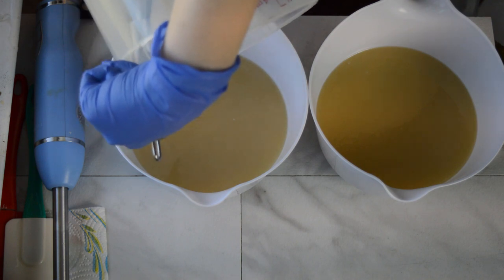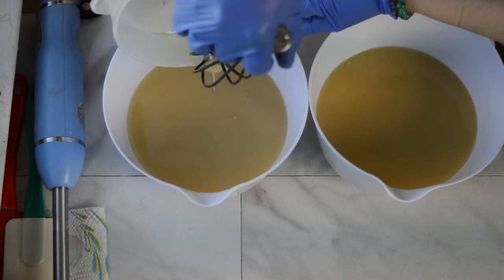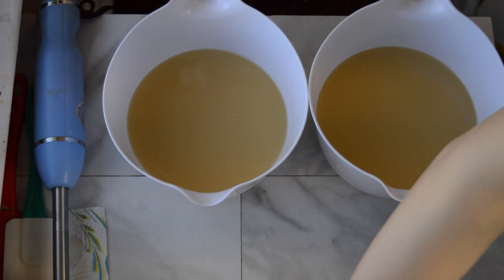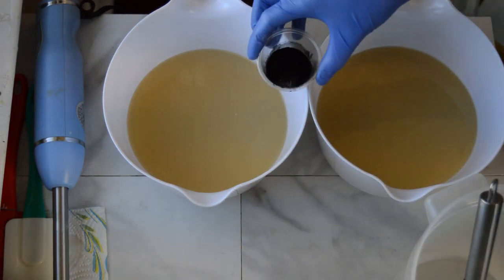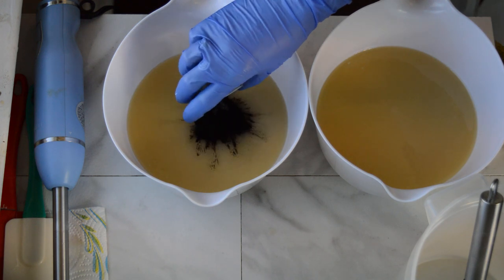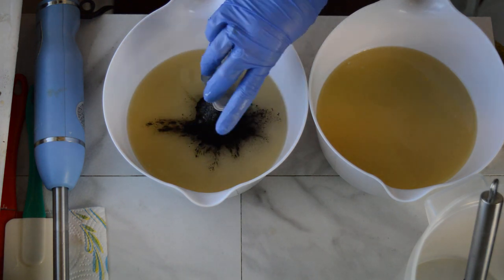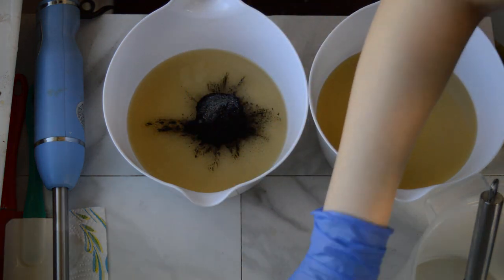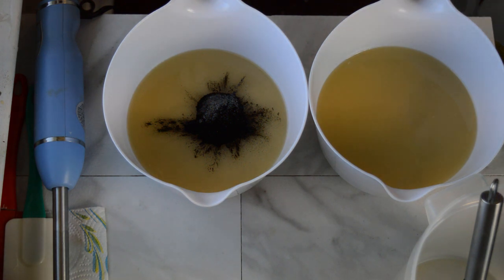And into the other container I have mixed up my favorite little concoction, a combination of black oxide, activated charcoal, and some enviroglitter from Nurture Soap called Black Onyx to add just a little bit of shimmer. So I will mix each one of those in. I'm just doing black and white today.